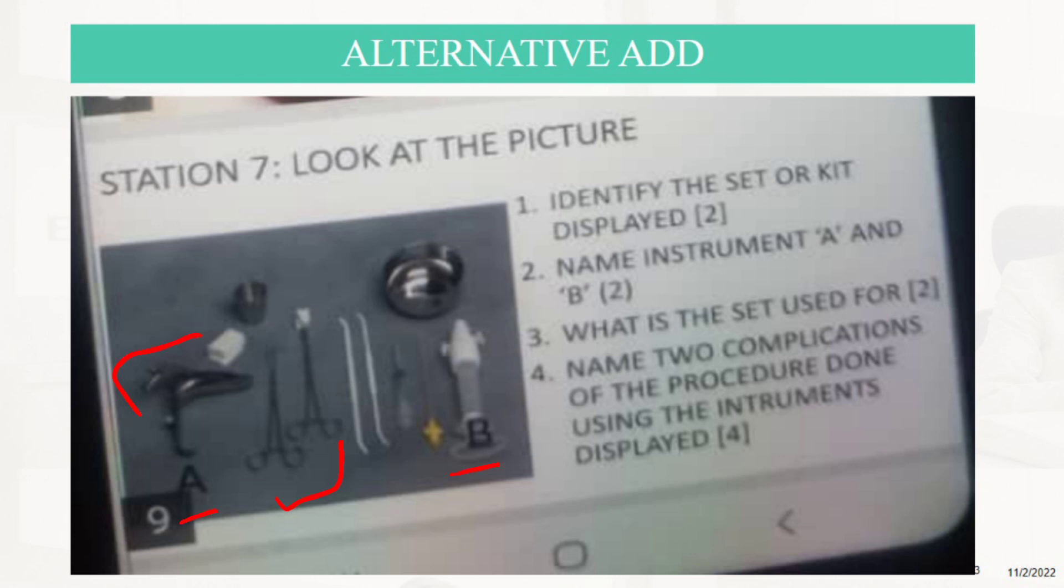This is the MVA pack with instruments A and B already mentioned. The set is used for evacuation of retained products of conception. Two complications of the procedure done using the instrument displayed - we've already mentioned those complications. This was about the MVA pack and we're done with this one.